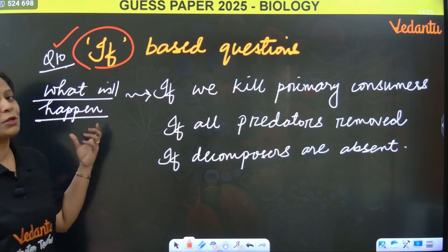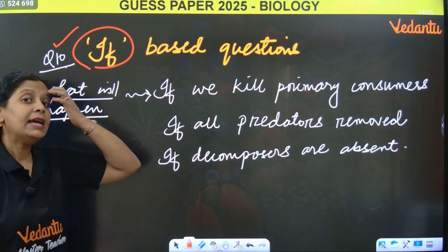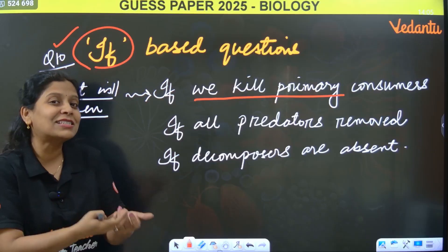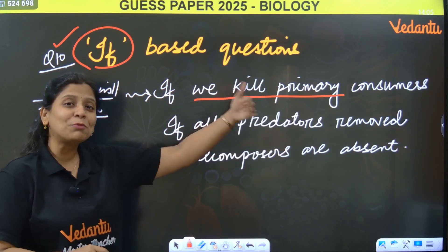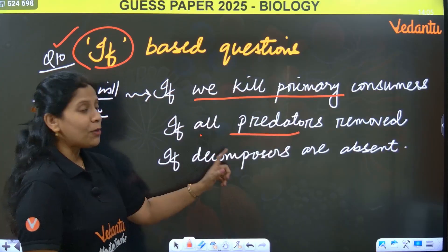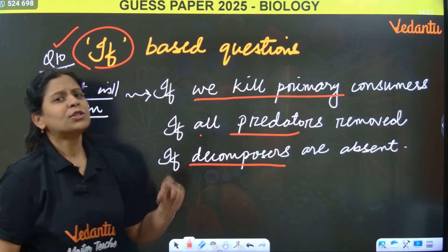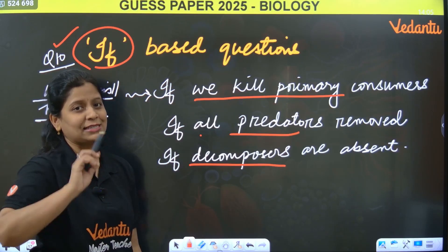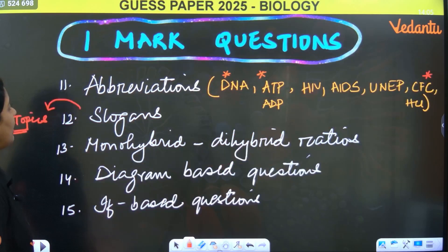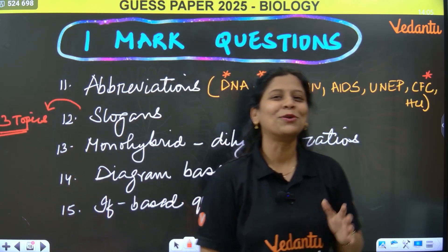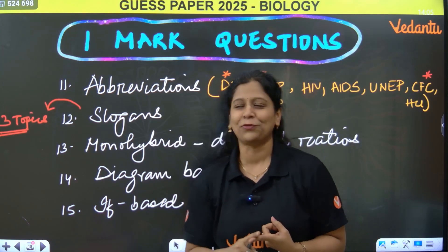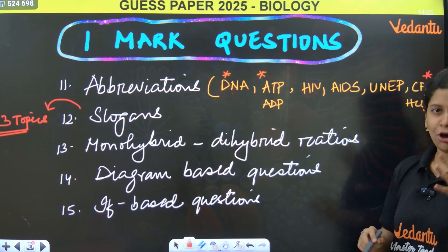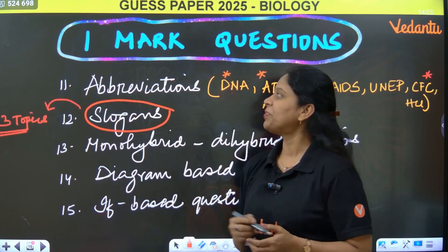Tenth question — hypothesis-based or 'if'-based questions. For example: if we kill primary consumers, what would be the problem? If decomposers are absent, what problem would we have? These are important 2-mark questions. Also one more question — abbreviation full forms: DNA, ATP, HIV, AIDS, UNEP, CFC, HCL, ADP — all these are important. Slogans are one more question type.